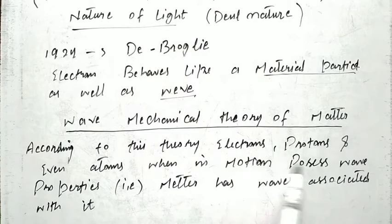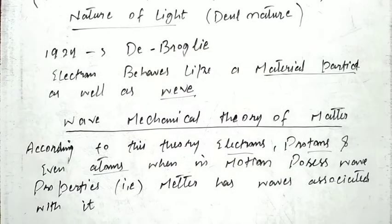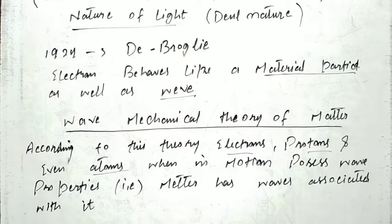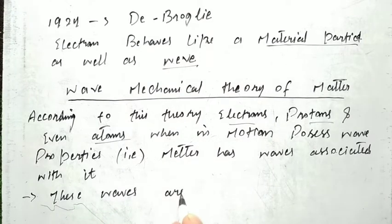According to this theory, electrons, protons, and even atoms, when in motion, possess wave properties. So we can say that matter has waves associated with it — just like radiation has both wave nature and particle nature. These waves are known as matter waves.